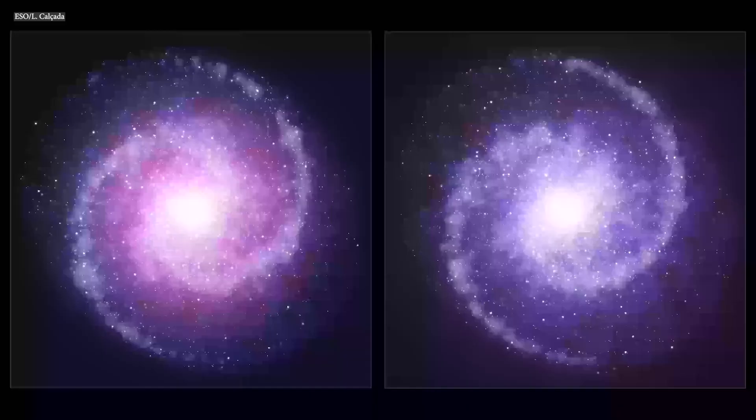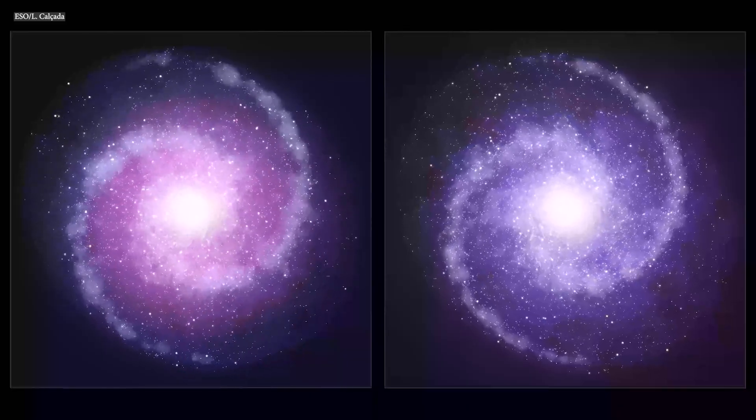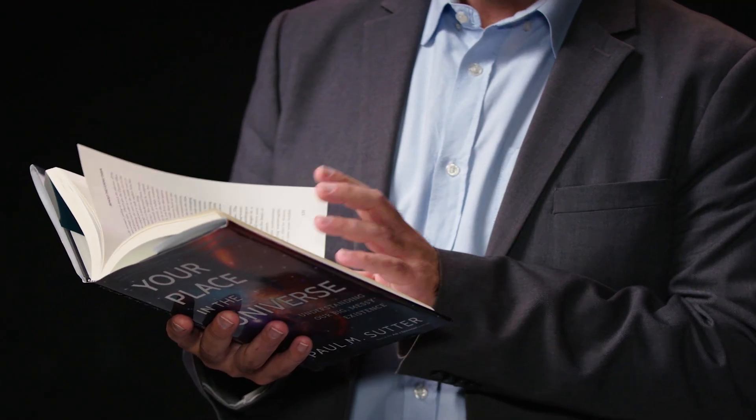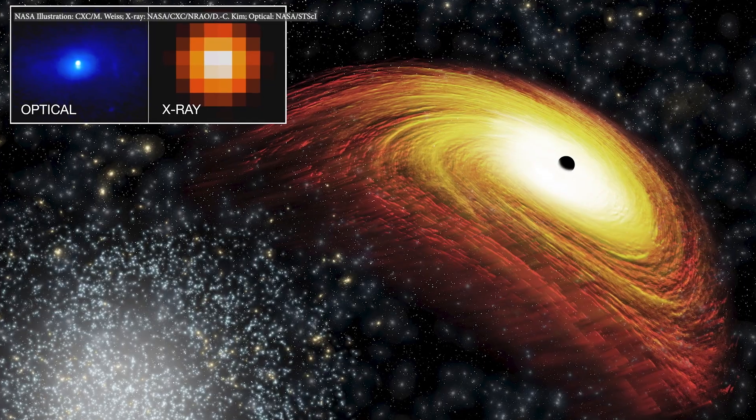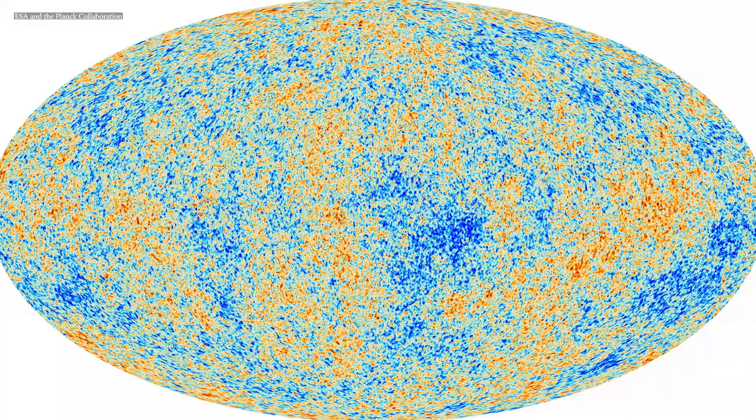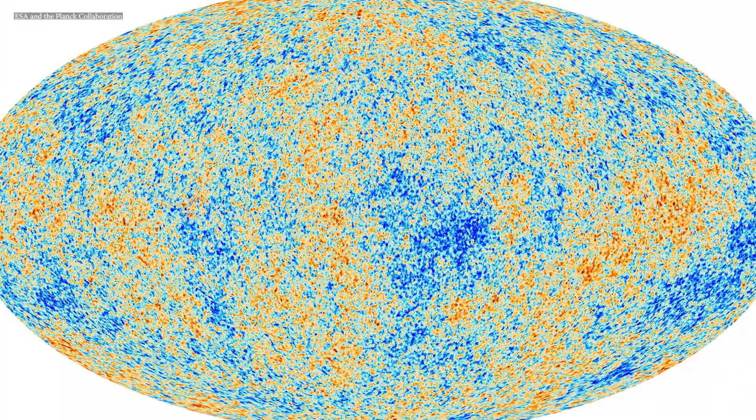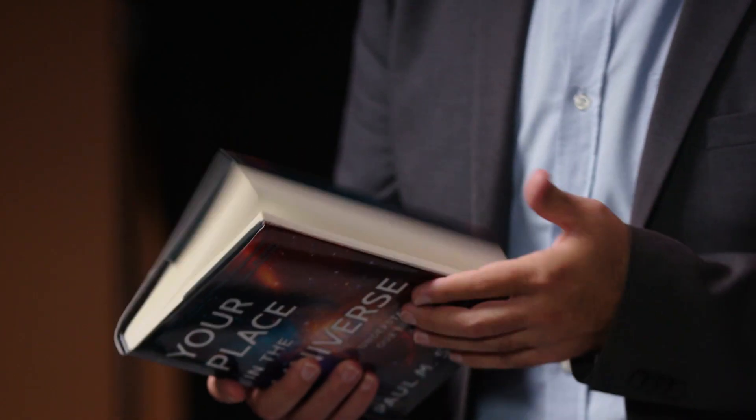I mean, I wrote a book about it. There's the rotation curves of galaxies, the temperatures of galaxy clusters, the bending of light around massive structures, the large-scale structure of the universe itself, the cosmic microwave background. It goes on and on and on. We know that dark matter exists, but we don't know what it is.